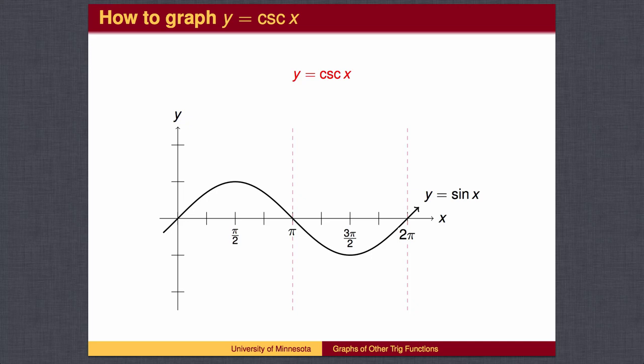At pi over 2, the reciprocal of 1 is 1, and similarly, at 3 pi over 2, the reciprocal of negative 1 is negative 1, so we can plot those two points.